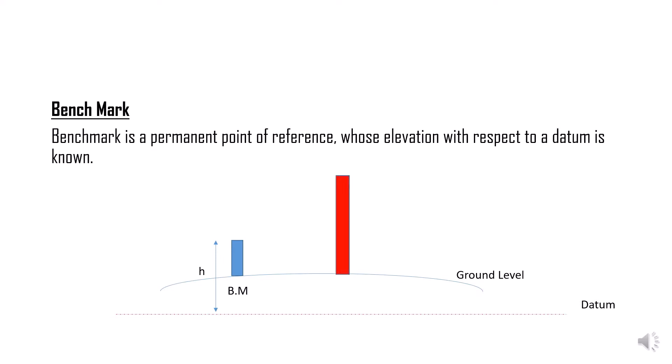Benchmark is represented as BM. If I have another object — shown in red — whose height H1 has to be determined with respect to the datum, I need to know a particular already-known reference point. That is the importance of benchmark. To summarize: datum is a reference surface; benchmark is a reference point; benchmark is referred with respect to the datum; and datum is a standardized surface or level.